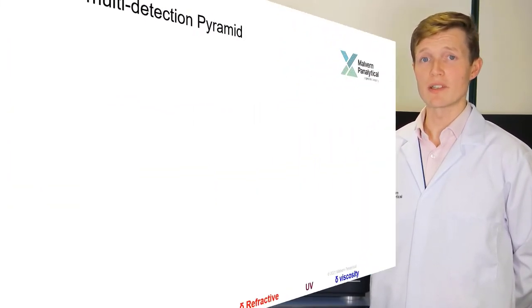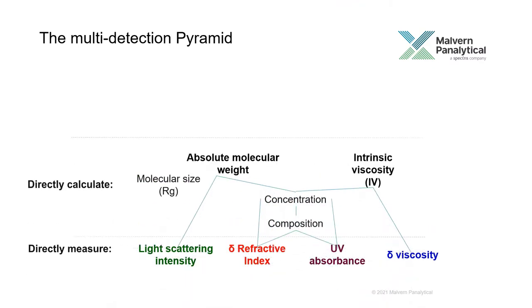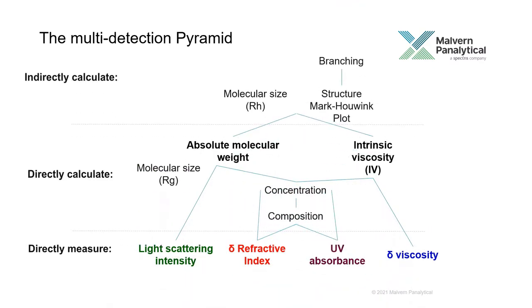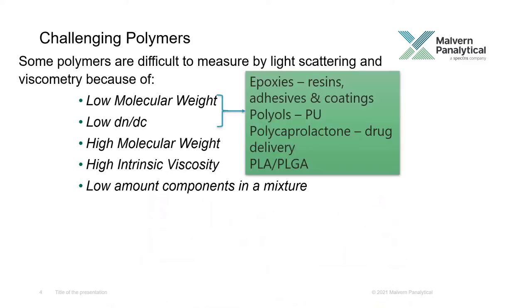That stems from the sensitivity of the light-scattering detectors in the Omniset, which enables you to determine the absolute molecular weight of your samples independent of your standard's chemistry, even for low molecular weight and low DNDC samples.